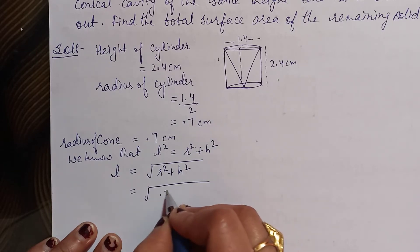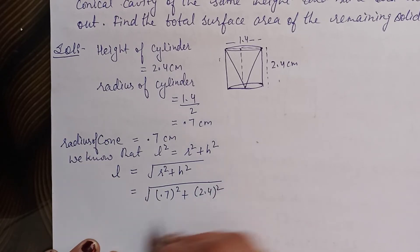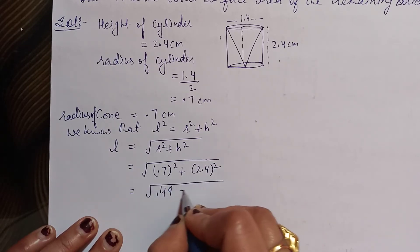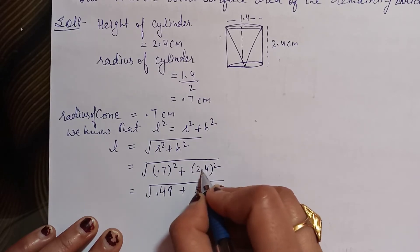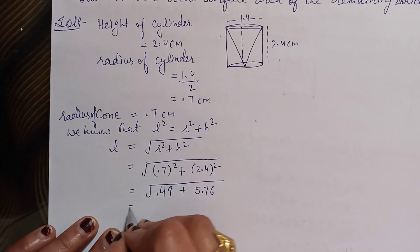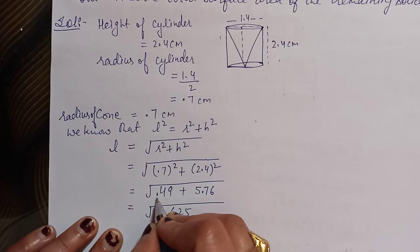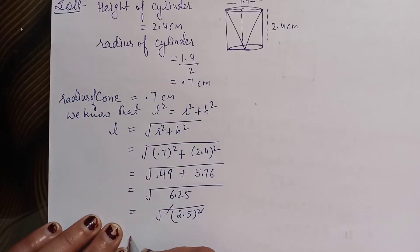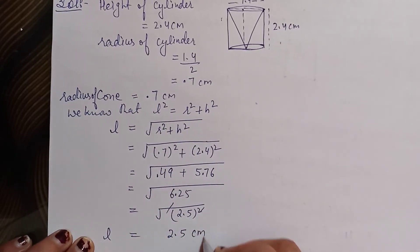l = √(0.7² + 2.4²) = √(0.49 + 5.76) = √6.25 = 2.5 cm. So the slant height l = 2.5 cm.